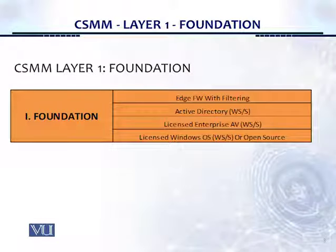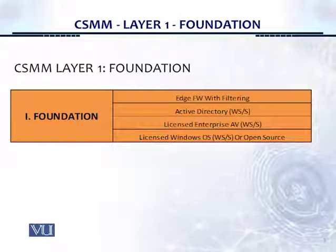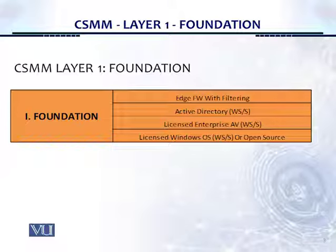This is the Cybersecurity Maturity Matrix Layer 1 foundation. It has four controls working from the bottom up to the top. First, licensed Windows or open source. Then, licensed enterprise antivirus for workstations and servers. Active Directory for workstations and servers. And edge firewall with filtering.